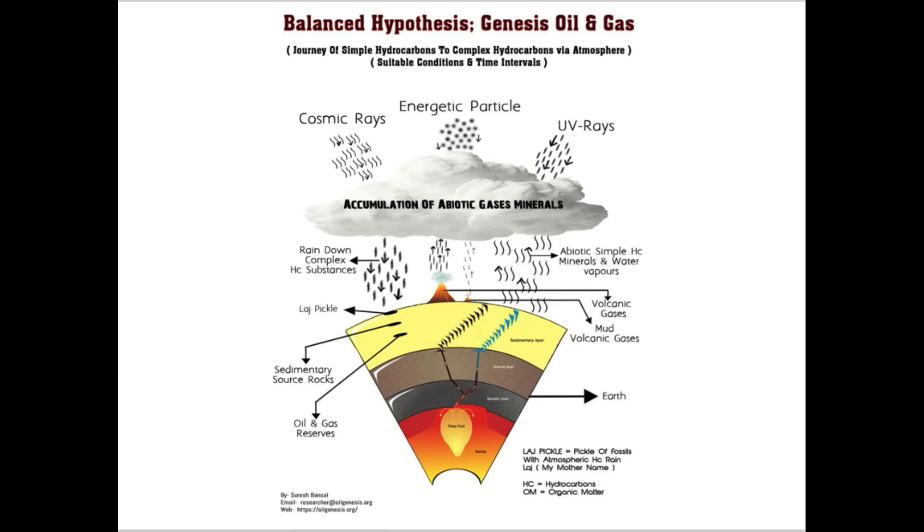Stage one. The Earth's internal hydrocarbon generation. The Earth's interior produces simple abiotic hydrocarbons which migrate to the atmosphere along with minerals, water vapor, and volcanic gases during suitable geological time intervals. Mostly intervals of impact craters.